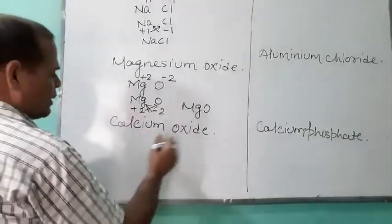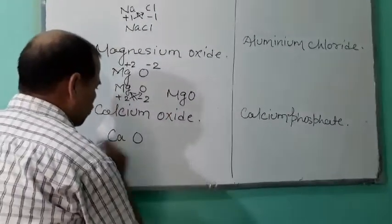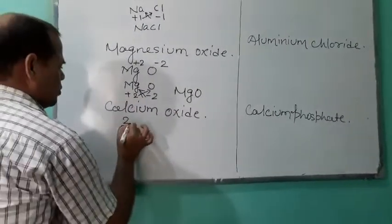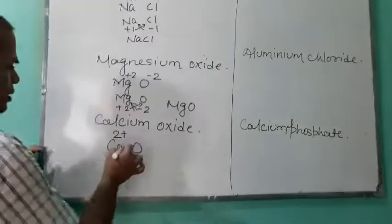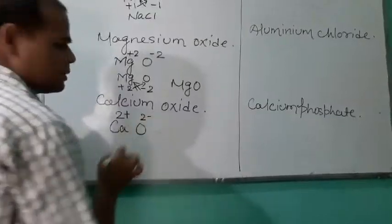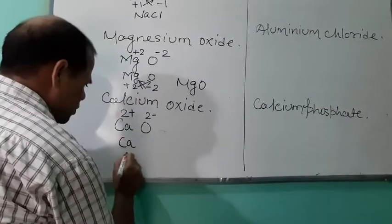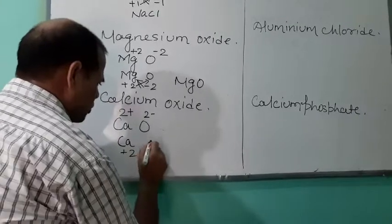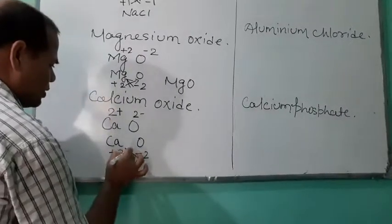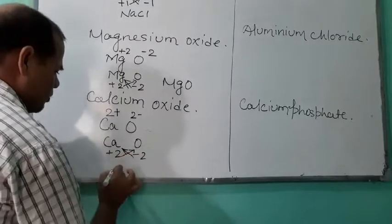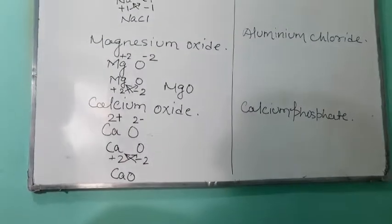Calcium oxide: Ca and O. Calcium has plus two; oxygen has minus two. Write Ca, plus two, oxide, minus two, and cross each other. The formula of calcium oxide is CaO.